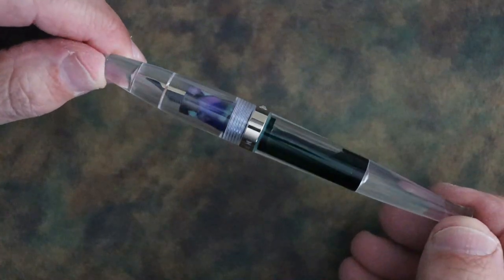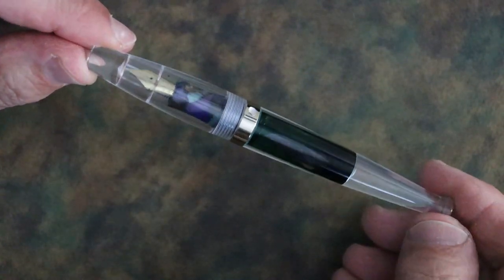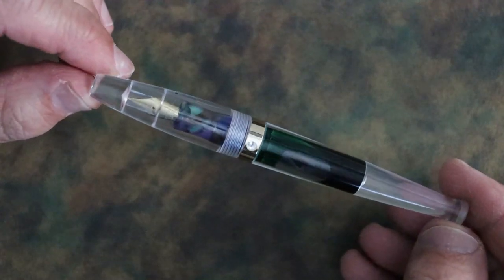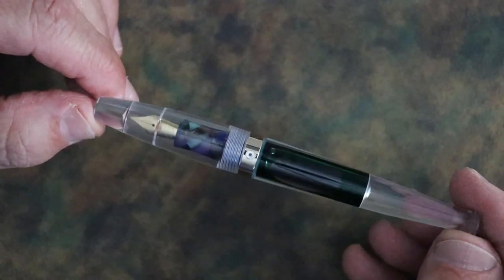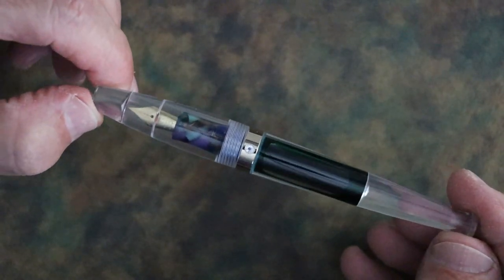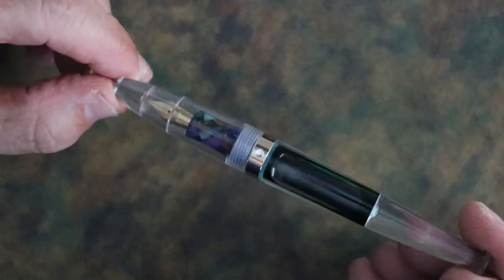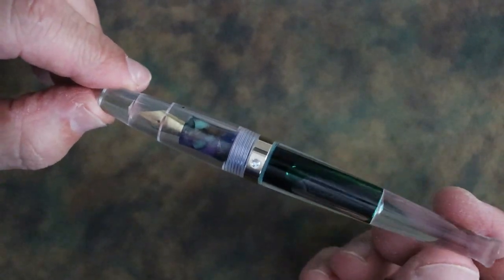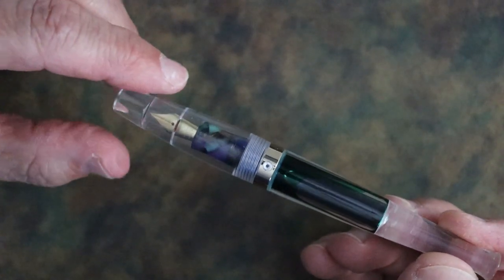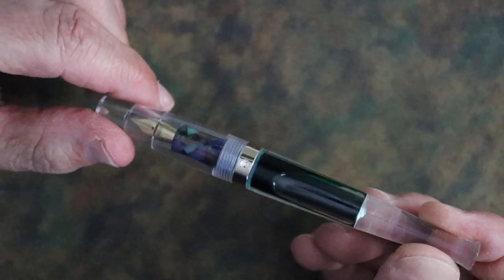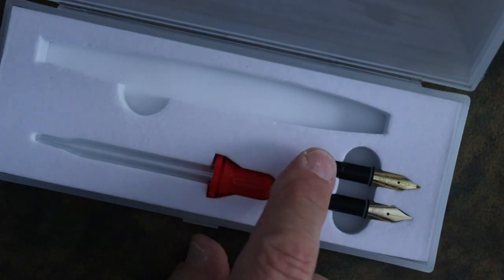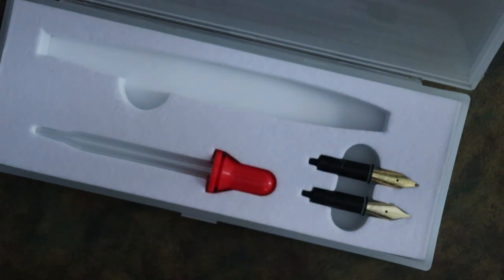Hey, today we're going to be looking at another eyedropper. In fact, this is solely an eyedropper fountain pen. This is the Mahjong S5 dropper pen. It retails for $24, which might seem like a little bit much for this pen, but it comes with its own eyedropper plus two other nibs.